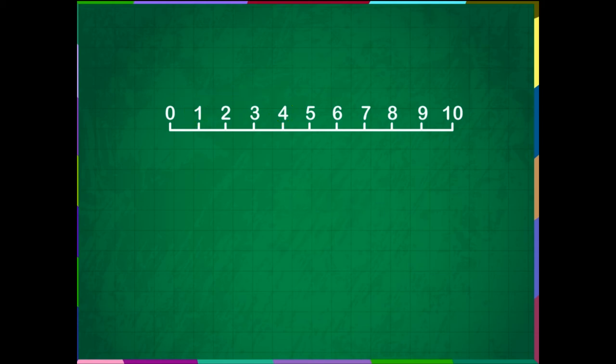Let us see one more example. Let us subtract 6 from 10 on a number line. Draw a number line as shown on the screen and mark till 10. To find the difference, we will start from 10 and jump backwards 6 times. We reached 4. So, the difference between 10 minus 6 is 4.